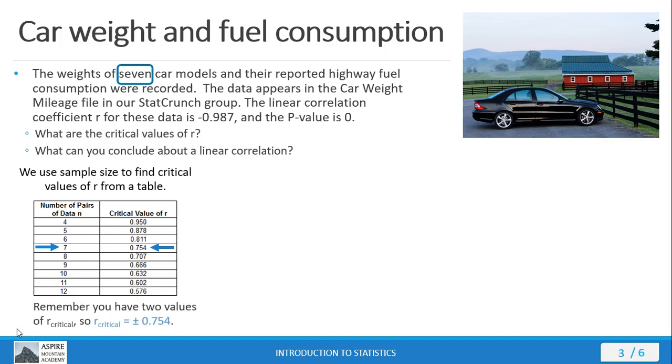But remember we have two values for critical R values. So one is positive and one is negative. The table just lists the positive value so don't forget the negative one. Now that answers our first question.